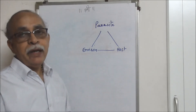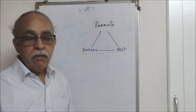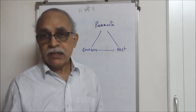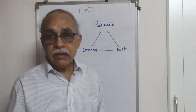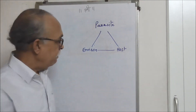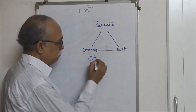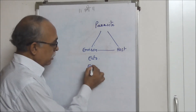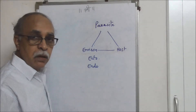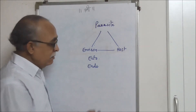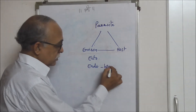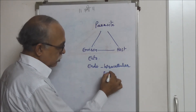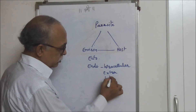Now, when considering parasitism broadly, I can identify them as ectoparasites and endoparasites. Parasites which stay outside the body of the host — like leech, ticks, bugs, and mites — would be ectoparasites. Those which invade and stay inside the body of the host would be endoparasites. Inside the body of the host, they could be intracellular, extracellular, or intercellular.